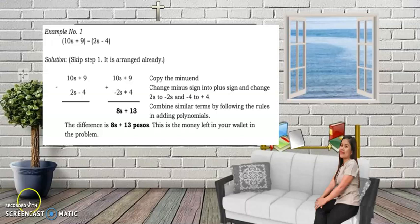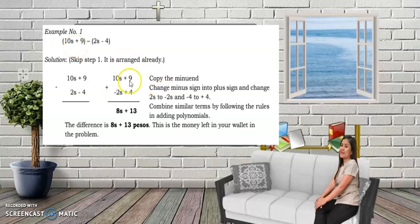Let's have Example 1: (10s + 9) minus (2s − 4). Here, 10s + 9 is our minuend and 2s − 4 is the subtrahend. Since it is already arranged we skip Step 1. We copy the minuend right away — the first C is Copy the minuend, so we write 10s + 9. Next, change the minus sign into a plus sign.